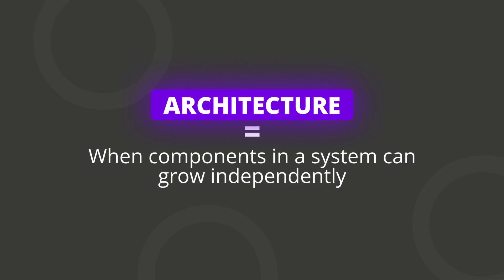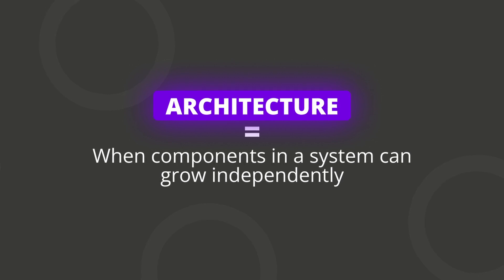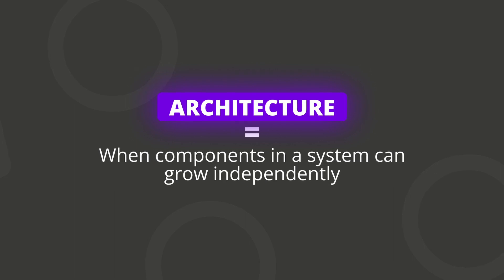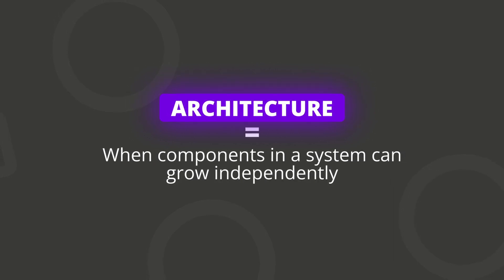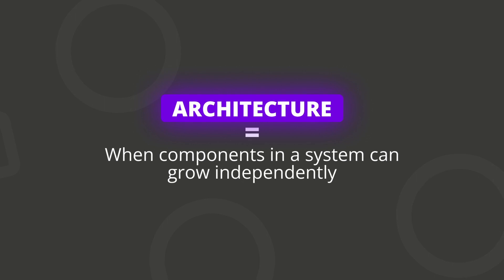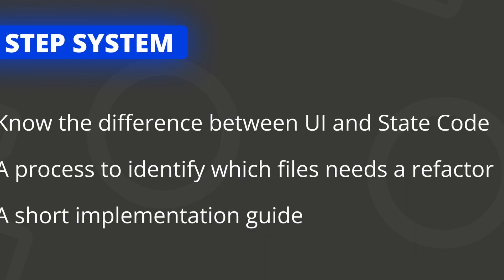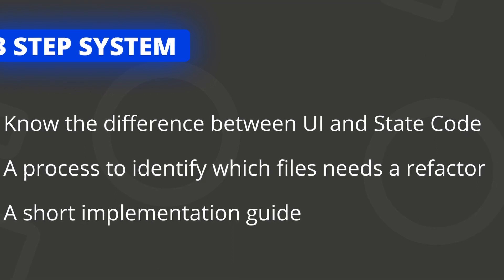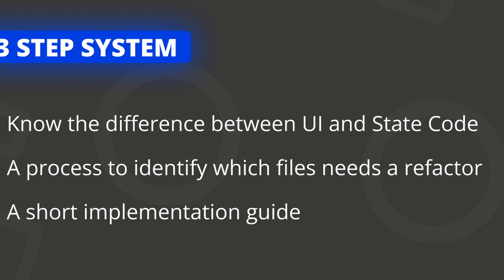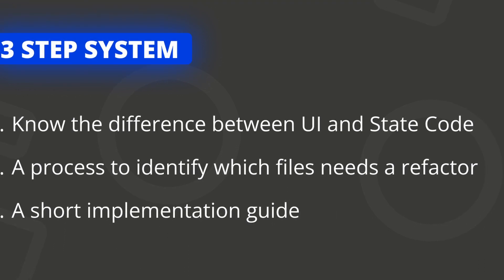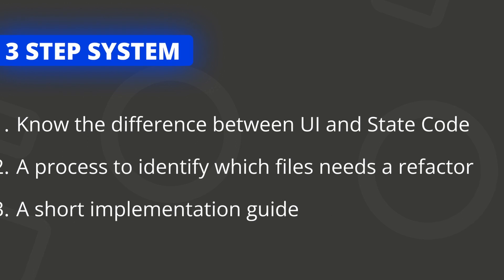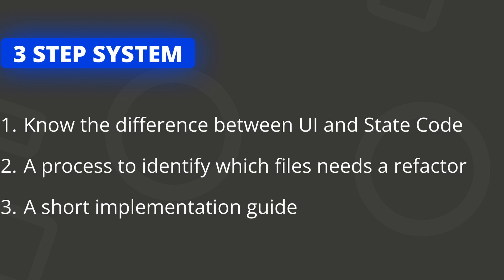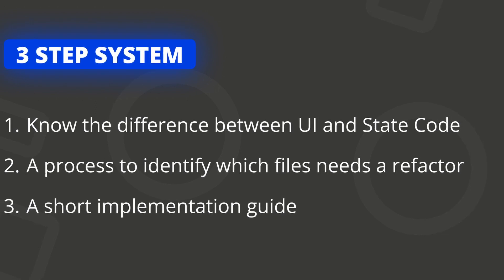Having all these separate components that speak to each other — because they are decoupled and there's a separation of concerns — you are able to grow these pieces independently and at some point even assign single teams to a single piece of the architecture. What I want to go over in this video is how you can identify the differences between UI and state code, the process of identifying the code that needs to be separated, as well as a short implementation guide.